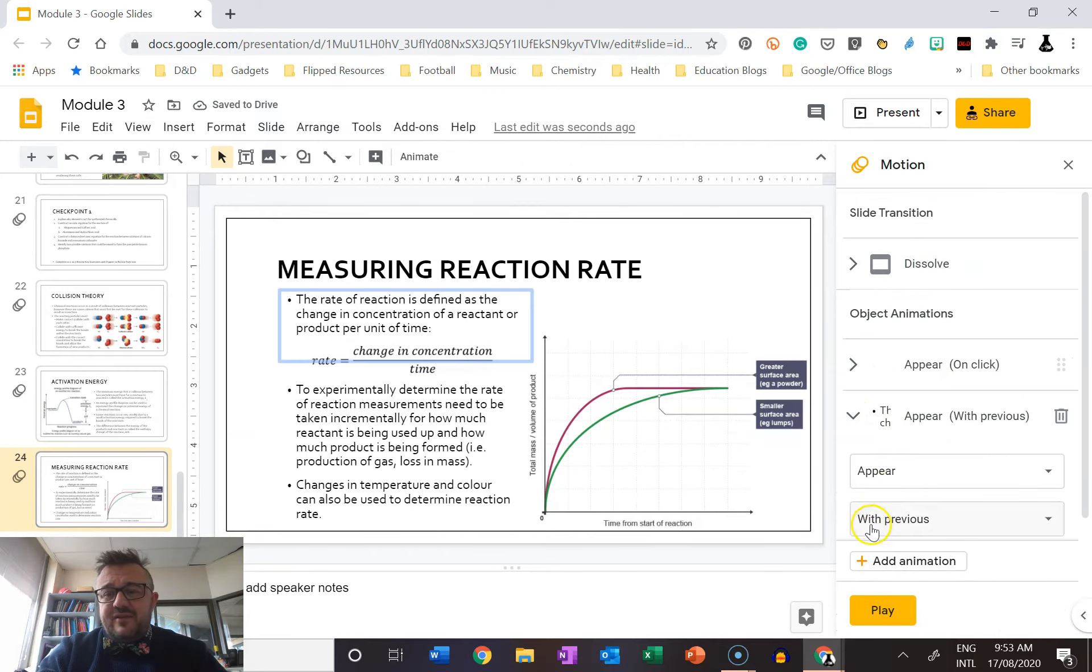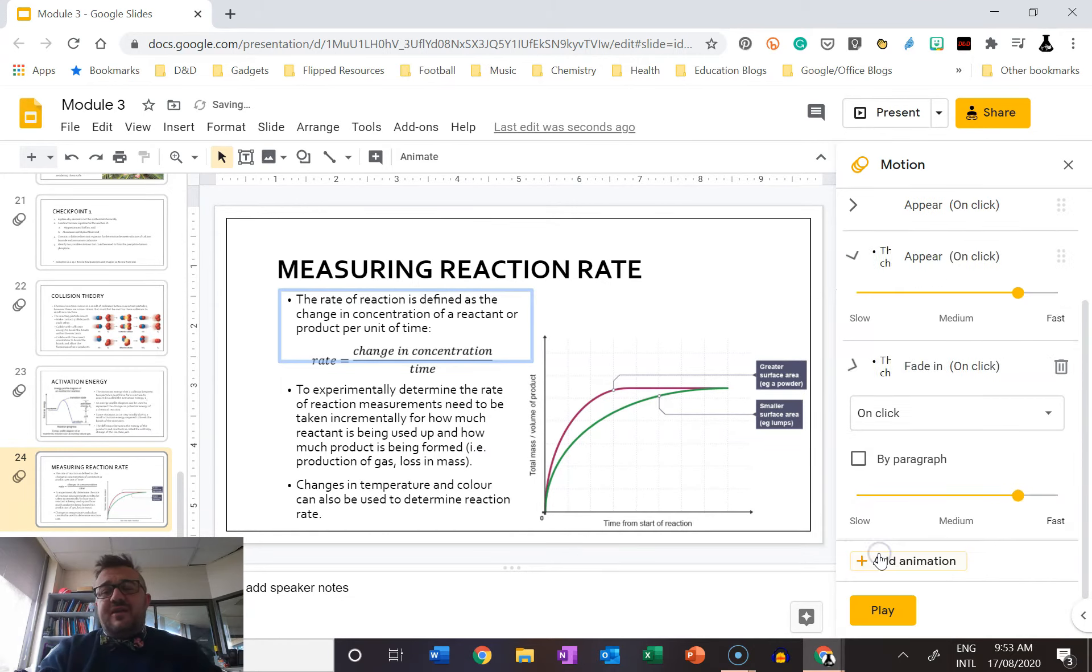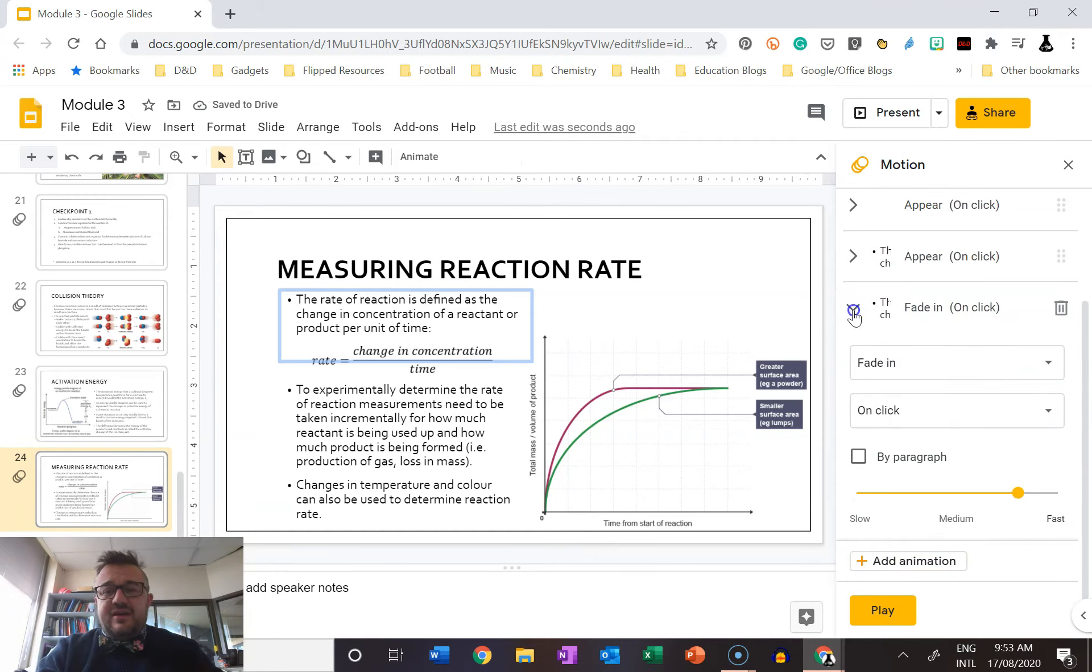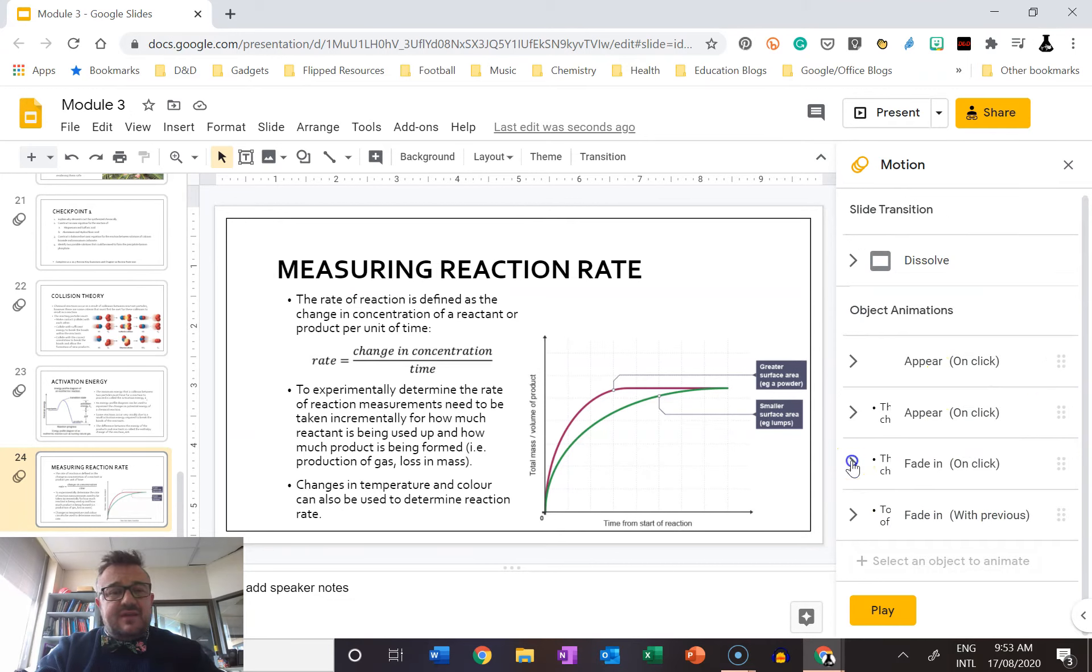So with previous means it will go one, two, three, and I want them to come in on a click so I can control it a lot easier. And then we come down here—that's the same one, it's been animated twice.